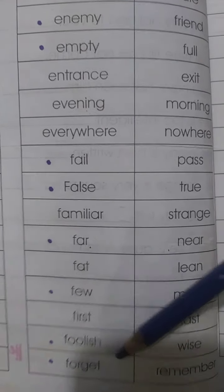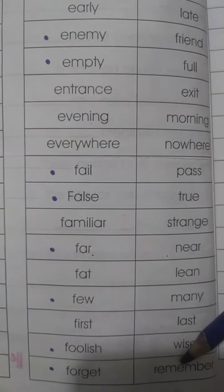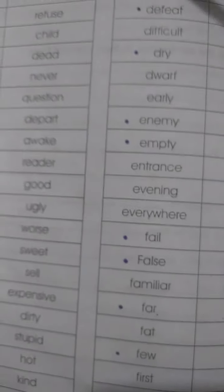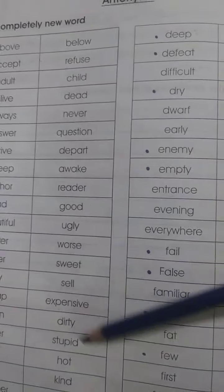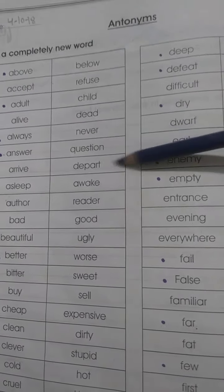'Forget' — yianni bhool jaana, meaning to forget. Antonym is 'remember' — yaad rakhna, meaning to remember. So, yaad dheekh siknye ki, we have read so many antonyms. And the meanings are also now known to you.